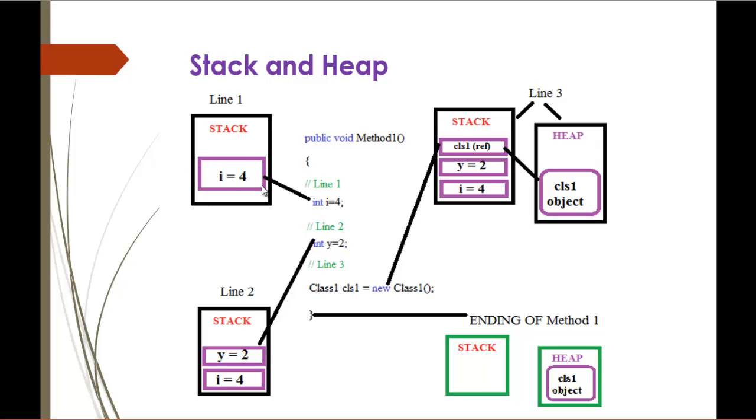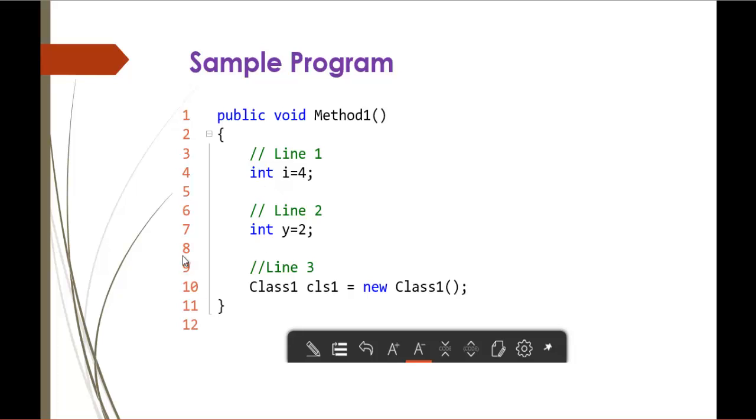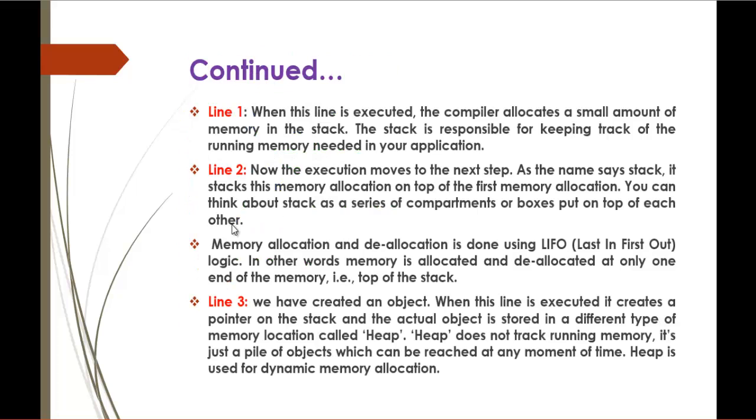Coming back to the second line, int y equals 2. What happens when int y equals 2 is executed? The execution moves to the next step. As the name says stack, it stacks this memory allocation on top of the first memory allocation. You can think about the stack as a series of compartments or boxes. Now to understand this, we will jump into a diagram.